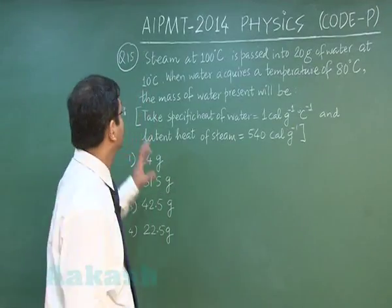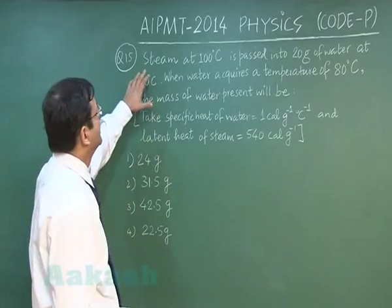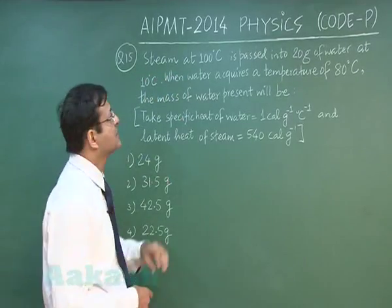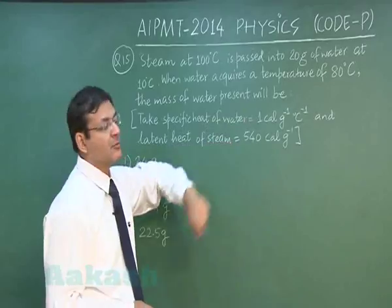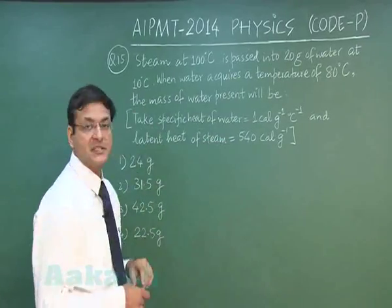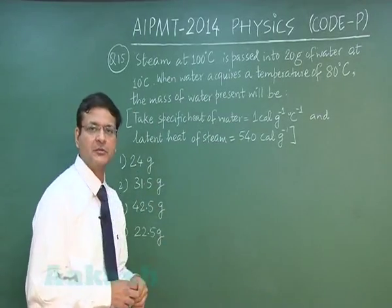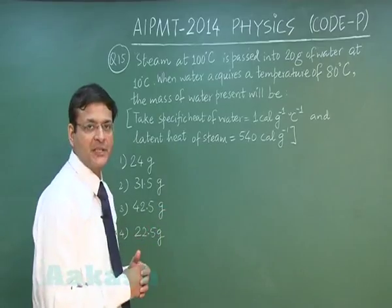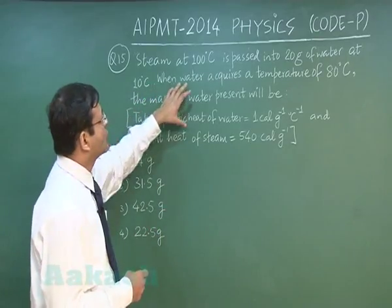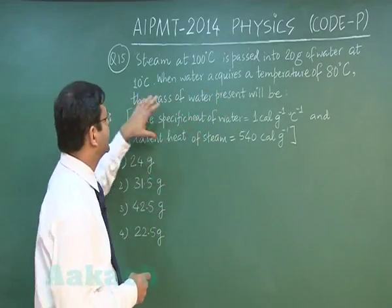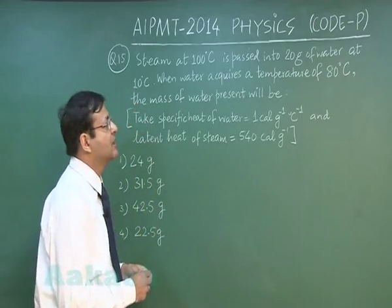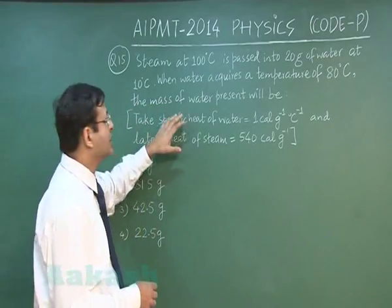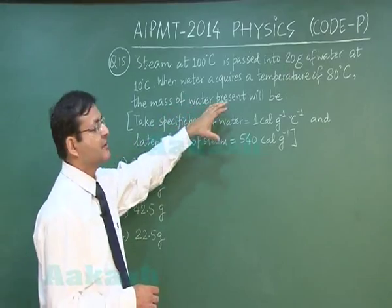Now in this question number 15 as it reads, steam at 100 degree Celsius is passed into 20 gram of water at 10 degree Celsius. Obviously this is a question of calorimetry in which you have to make the heat balance. When water acquires a temperature of 80 degree Celsius, the water is acquiring heat and of course steam is losing it, the mass of water present will be.